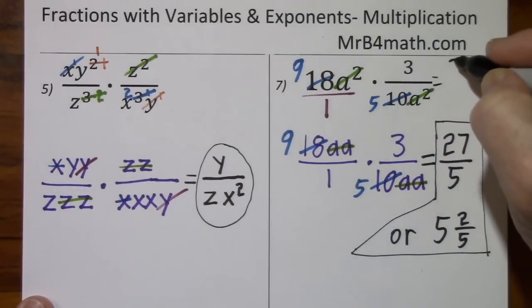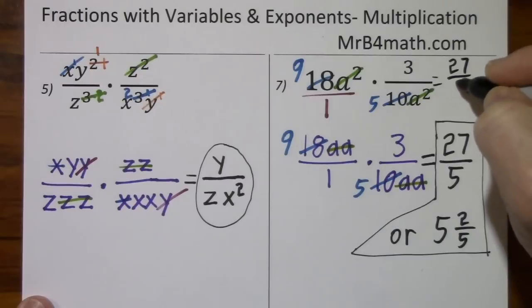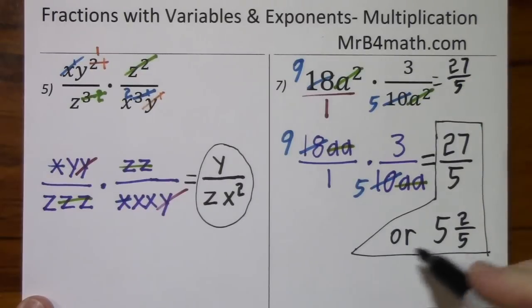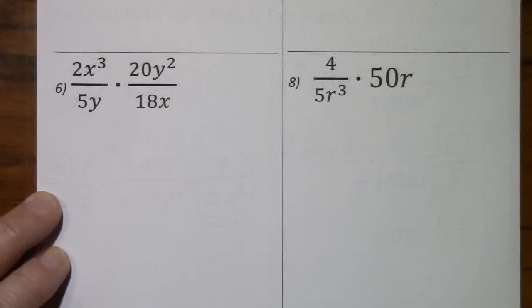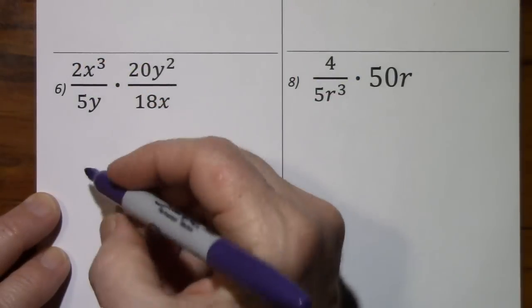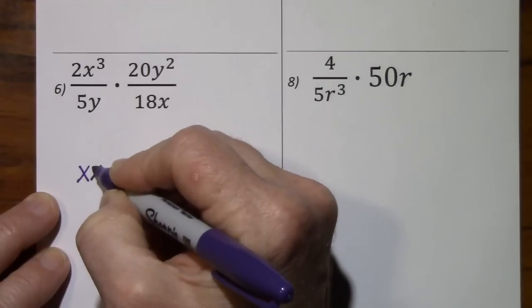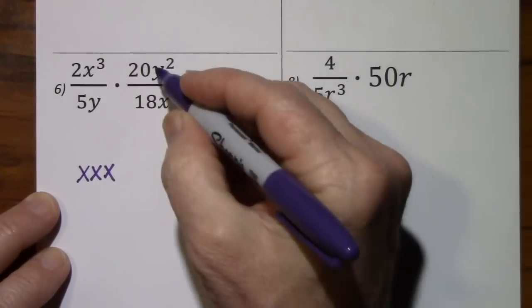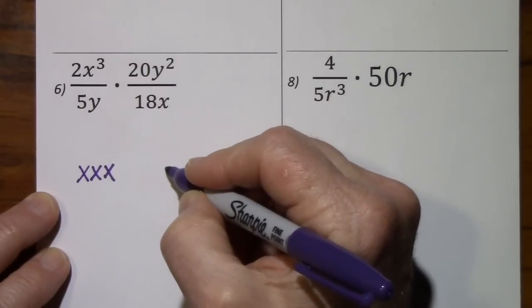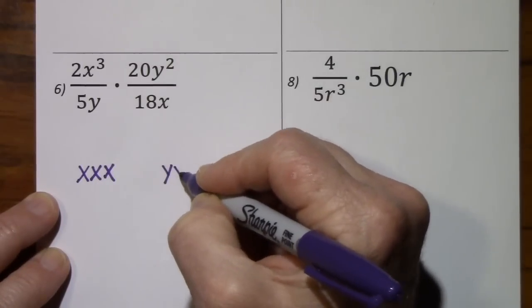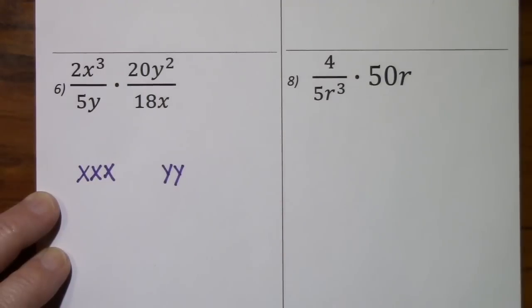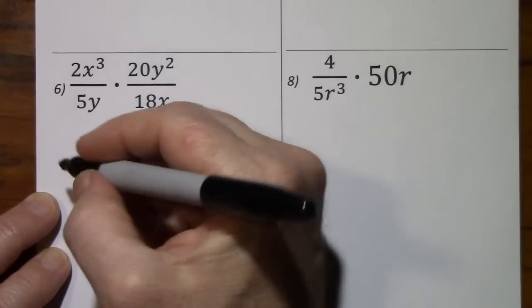So you would still get 27 fifths. And we rewrote that as a mixed number as well. Now our x to the third I'll write as x times x times x. The y squared, y times y. I'll bring everything else down.